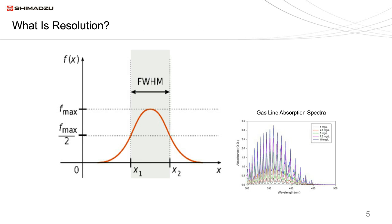Let's take a quick look at spectral resolution and how it's defined for a spectrophotometer. On the left, you see a typical Gaussian peak, and resolution is defined as the full width at half maximum, or the half bandwidth. This is determined by measuring to the top of the peak, labeled F max, and going halfway down. That width across the peak at half the peak height is considered the half bandwidth. On the right is a gas phase spectra which has a number of sharp peaks, showing how resolution can be important if you have narrow bands you need to resolve.